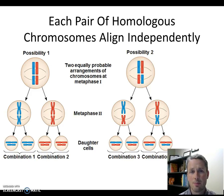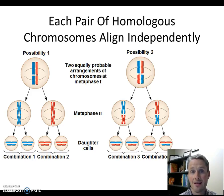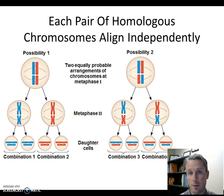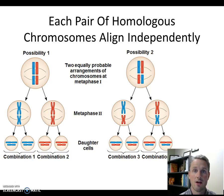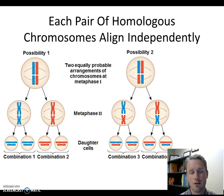Another example of an independent event is when we flip a coin. If we flip a coin the first time and get heads, it doesn't mean we have to get tails the next time. We could get heads or tails with equally likely probabilities the second time. So how does that relate to independent assortment of these homologous chromosomes?